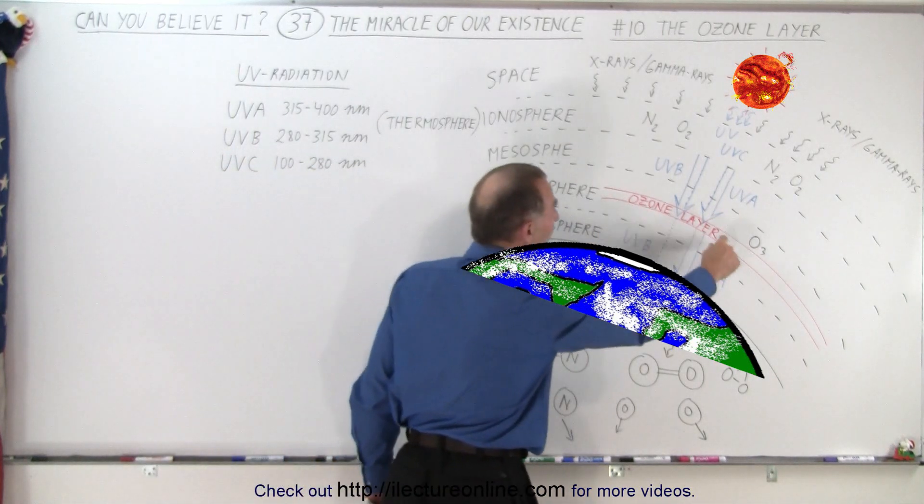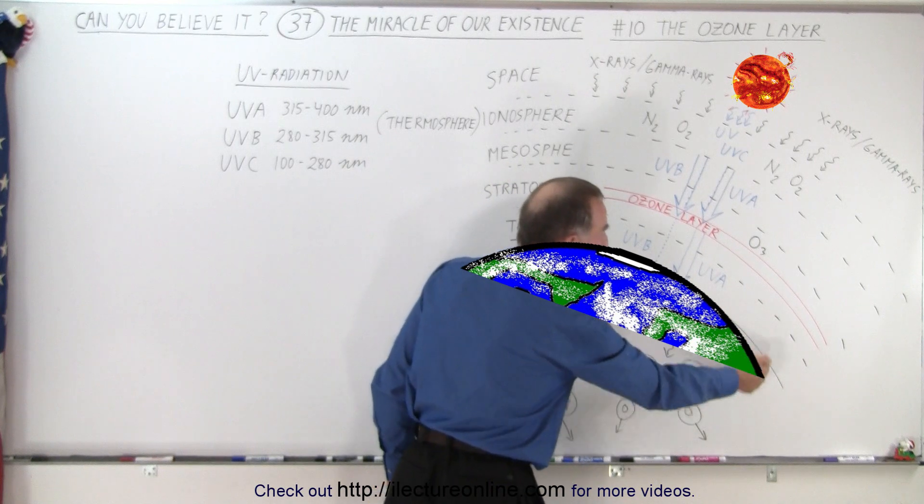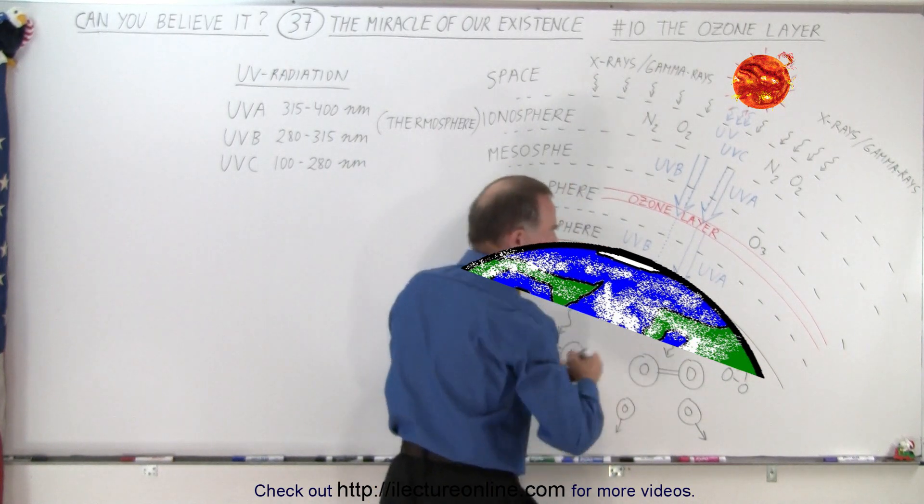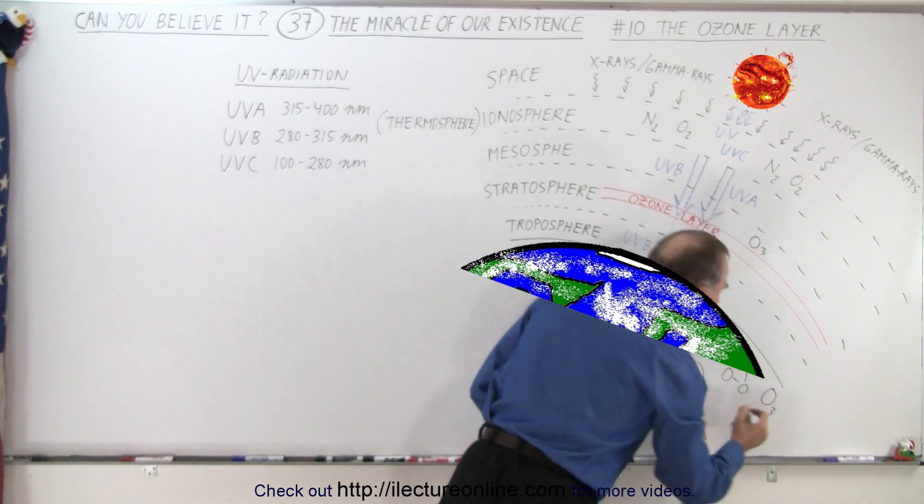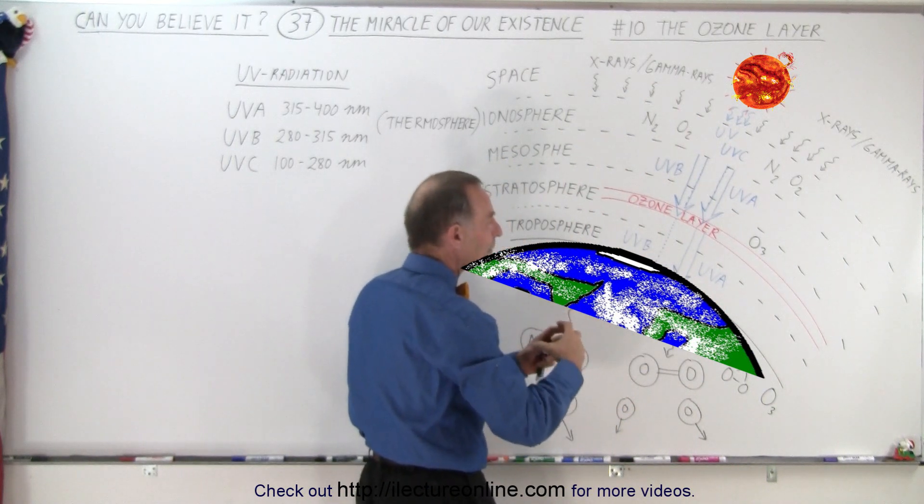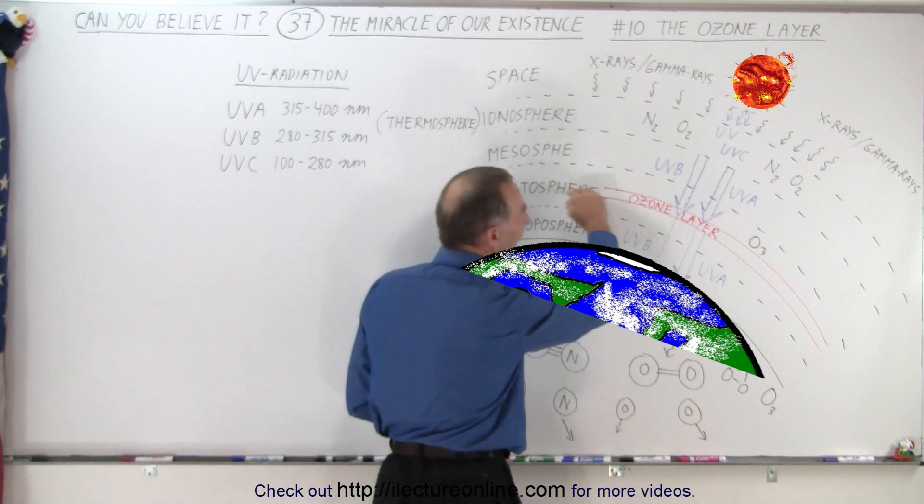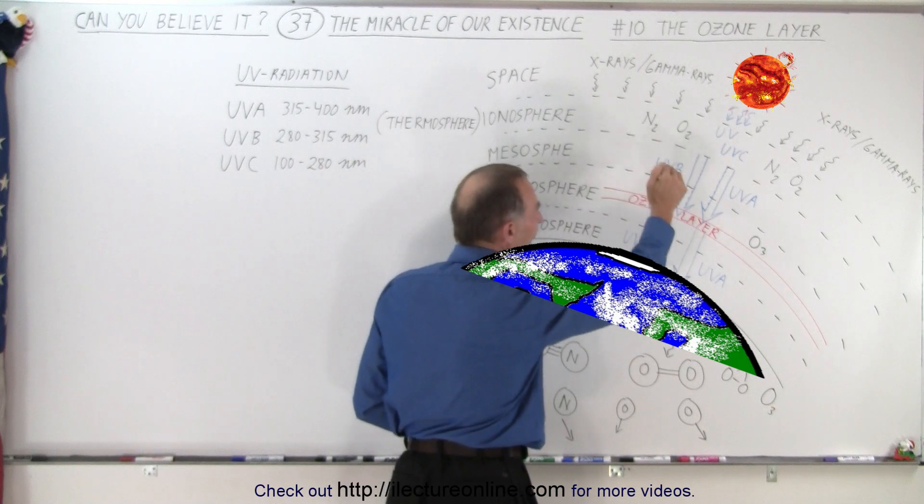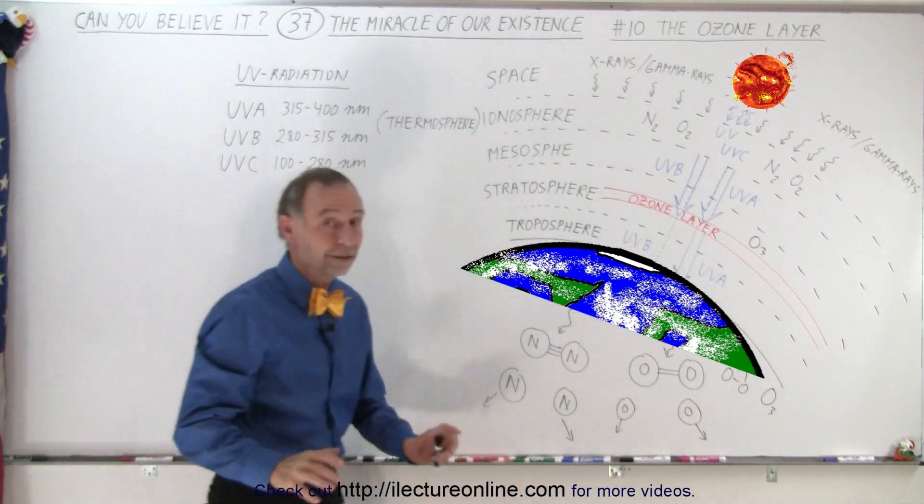So it's the ozone layer that is made up of very special O3 molecules, with three atoms of oxygen combined together in a molecule. And the ozone layer protects us from UVB radiation. Fantastic.